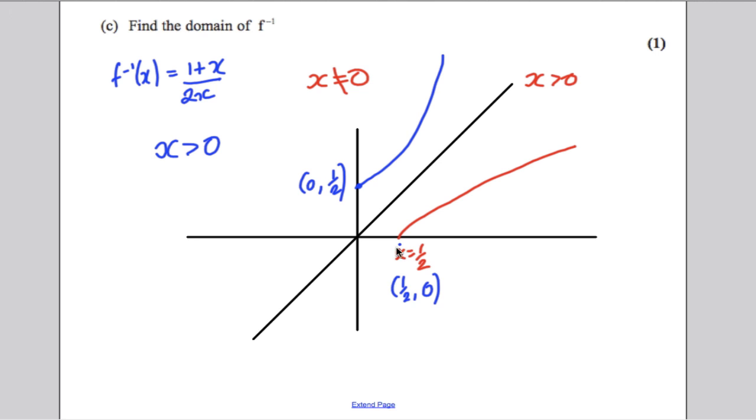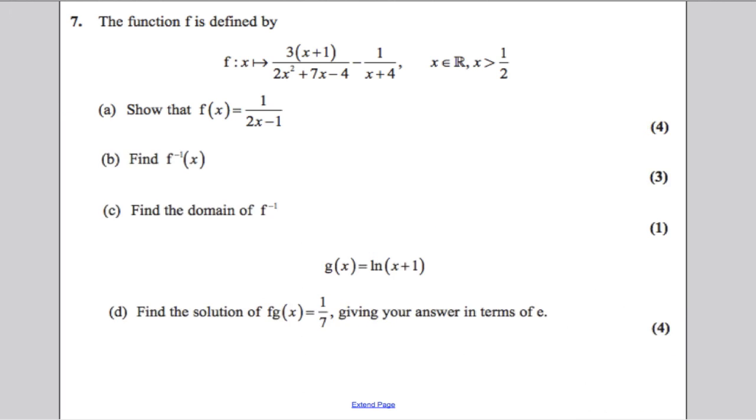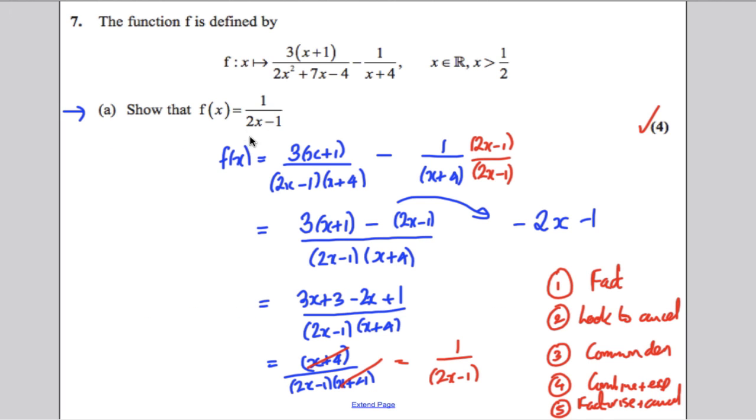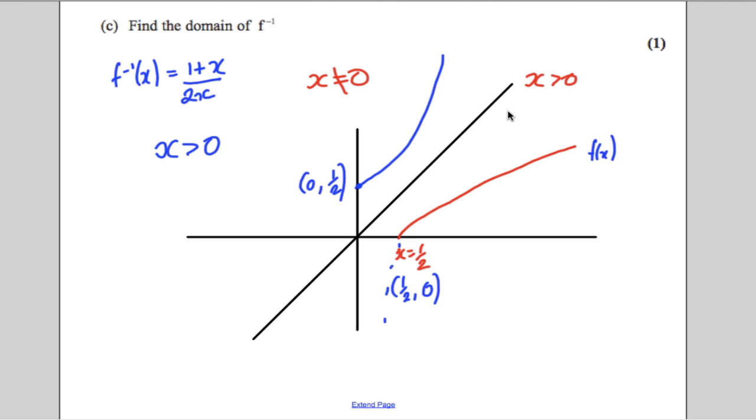Now, how do we know that the graph didn't go down here, the original f(x) graph? How do we know it didn't? Well, looking back at the function, if x is bigger than half, this number here will always be bigger than 1. So this will always be a positive number. So you have to think of it in that sort of way in order to get this answer here.